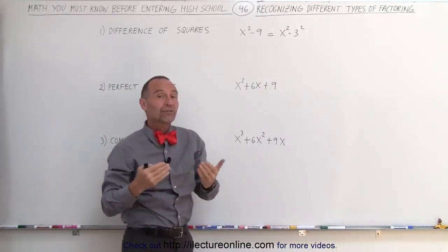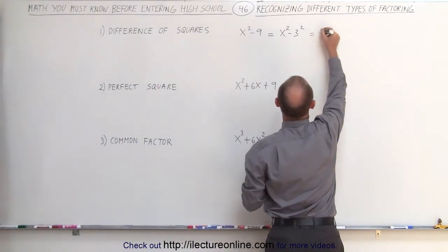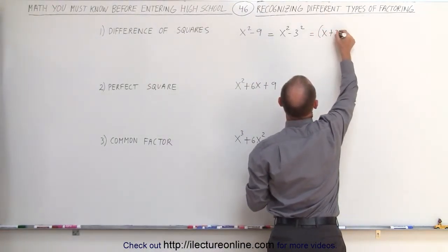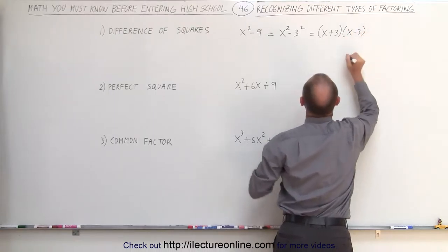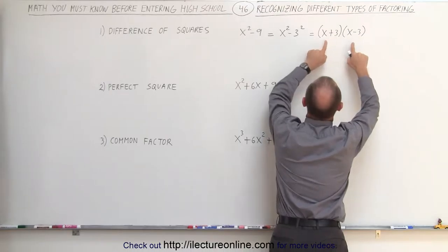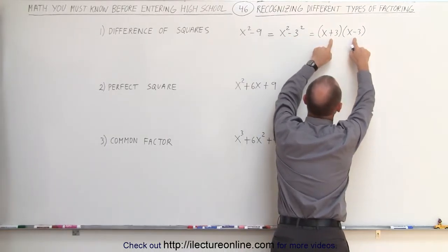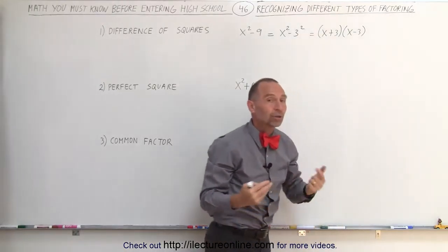When you factor the difference of squares, the answer is very easy. This is equal to x plus 3 times x minus 3. Notice we have x times x, and we have 3 times 3. The sign, however, can only be negative here if we have a plus and a minus there, which also causes the middle term to disappear.